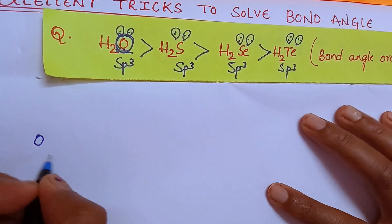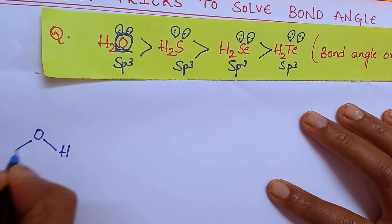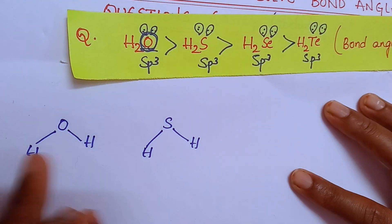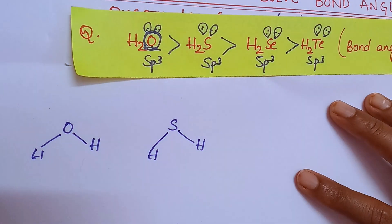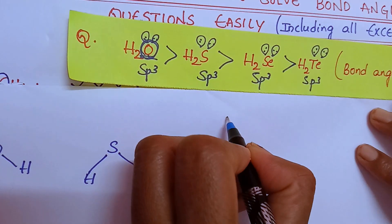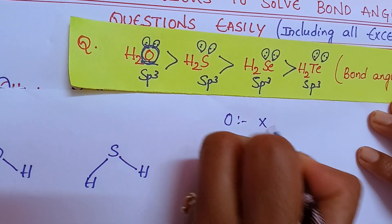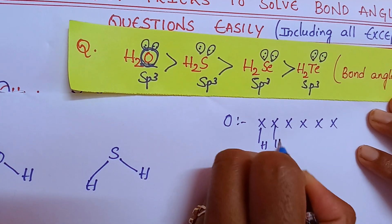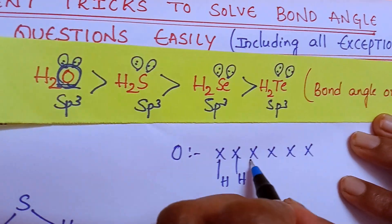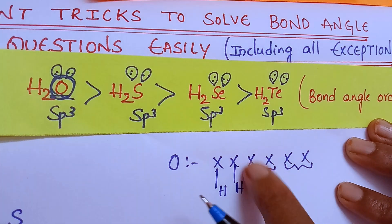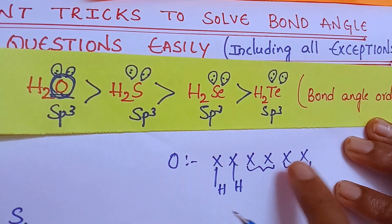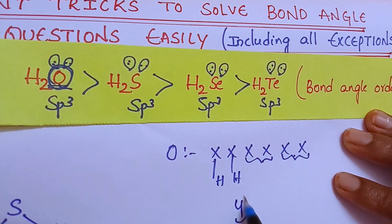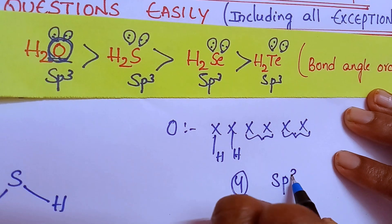The first example is H2O. This is oxygen. Now compare with H2S. In this case, find hybridization — you get the same hybridization SP3 for both. Oxygen has 6 valence electrons, hydrogen can form only one bond, and there are 2 lone pairs. So total steric number is 4, which gives SP3 hybridization.